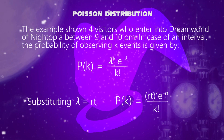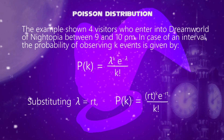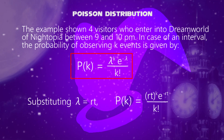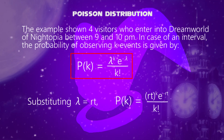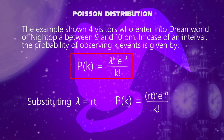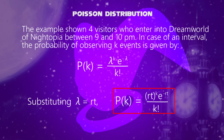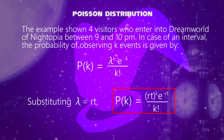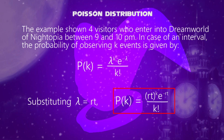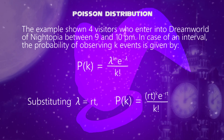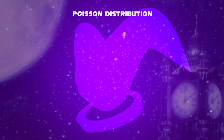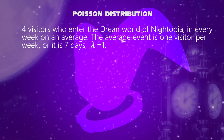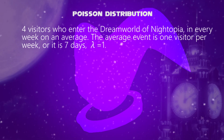In case of an interval, the probability of observing k events is given by lambda to the k exponent times e to the exponent minus lambda, divided by k factorial. Then substituting via lambda equals rt. For example, four visitors who enter the dream world of Nitopia in every week on average.